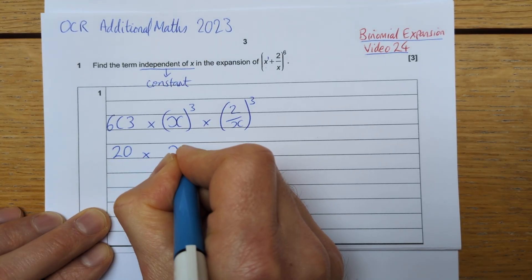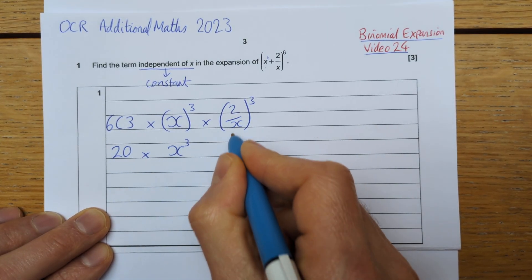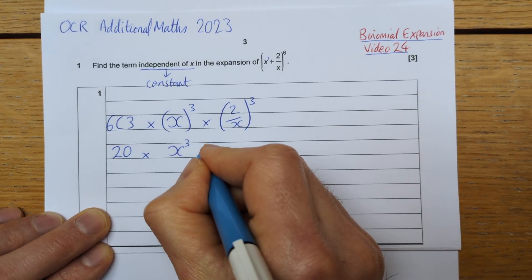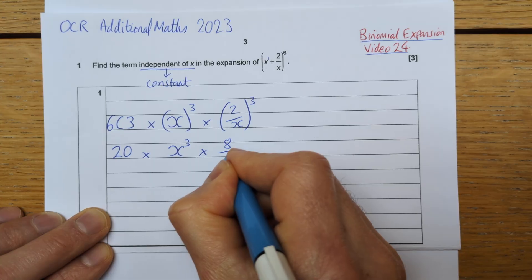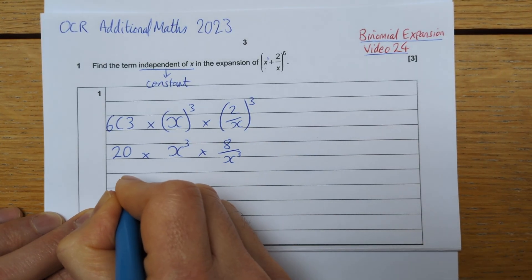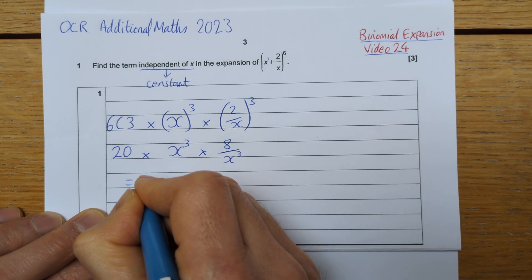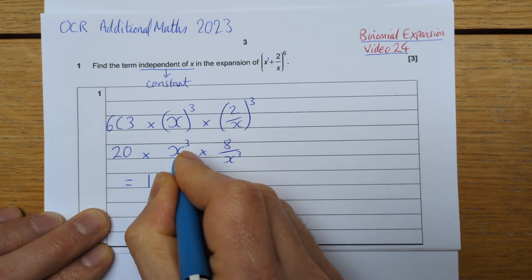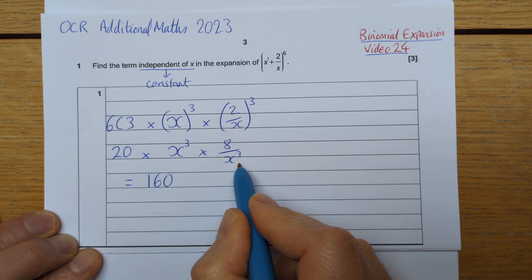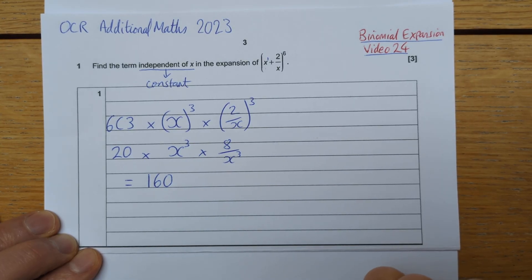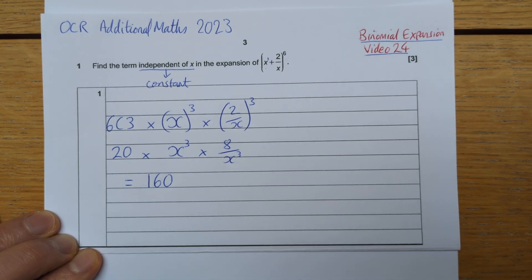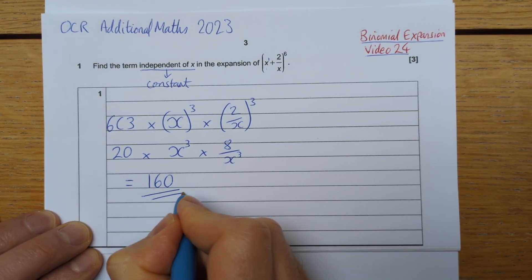20 multiplied by x to the power of 3 is x cubed. 2 over x to the power of 3 is 2 over x multiplied by 2 over x multiplied by 2 over x. So that becomes 8 over x cubed. And then when I multiply those together, what I get is 160. Because the x cubed and the divide by x cubed, or the x cubed and the x to the negative 3 in effect, multiply to make x to the power of 0. And therefore, I have a term independent of x, which is just 20 times 8, which is 160. And there is my answer.